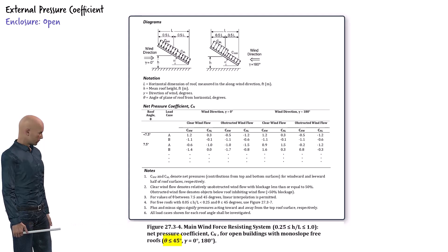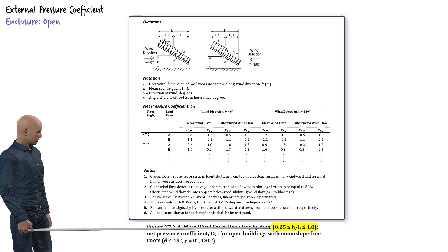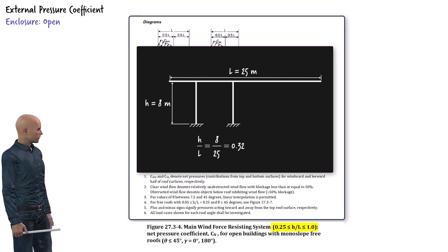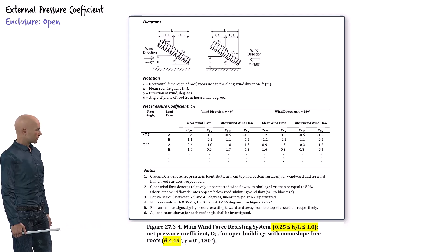Our roof is flat, with a slope of zero. In addition to this requirement, the figure applies only when the ratio of the roof height above ground, h, to the length of the roof in the direction of the wind, l, falls between 0.25 and 1.0. In our case, the roof height is 8 meters and the roof length in the wind direction is 25 meters, giving an H/L ratio of 0.32, which falls within the acceptable range. Since both of these conditions are met, we can use the figure to determine the pressure coefficients for our open canopy.